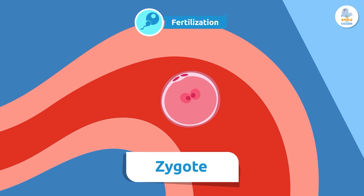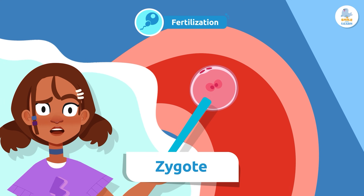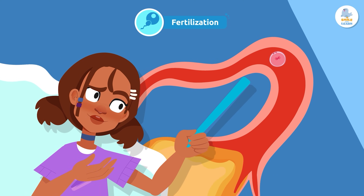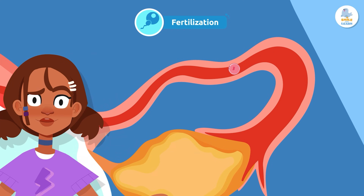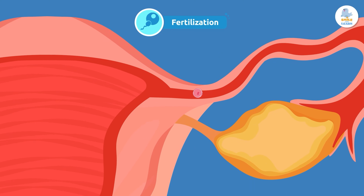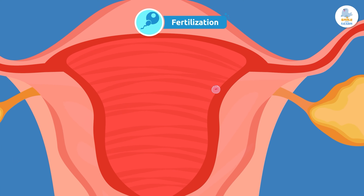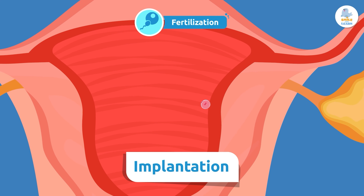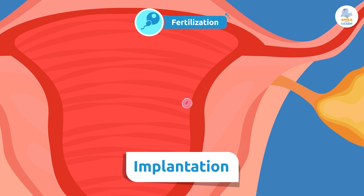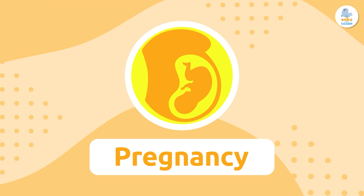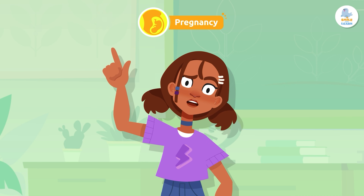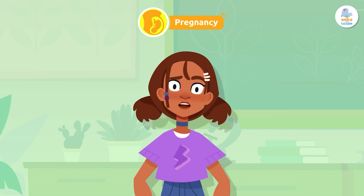When the sperm enters the egg, the zygote forms. The zygote is a cell that has all the information necessary to create a new human being. It must travel to the wall of the uterus to implant itself, which is why this process is called implantation. All of this happens in less than a week.